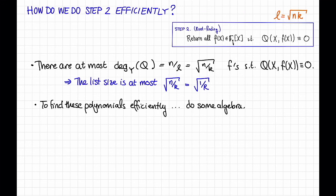If you trust that, that's Sudan's algorithm. It lets us list decode Reed-Solomon codes well beyond half the distance, up to a bit less than the Johnson bound. In the next video, we'll see how to improve on this idea to get all the way up to the Johnson bound.